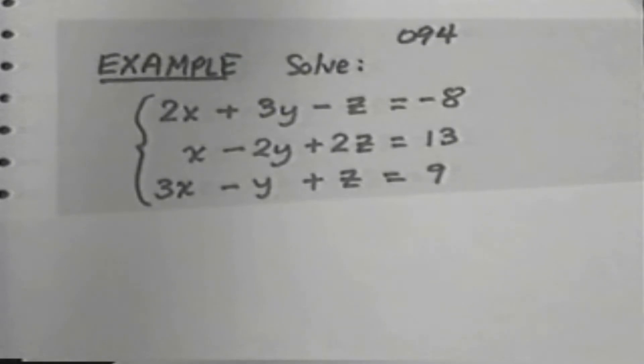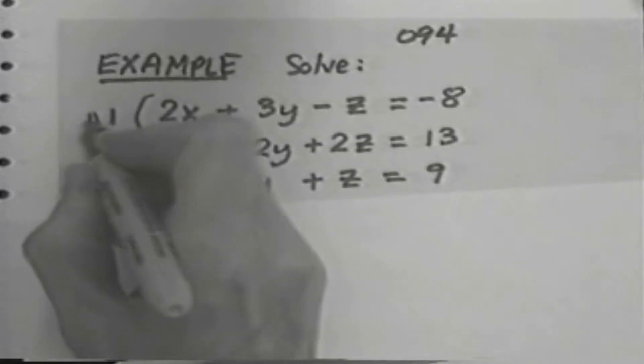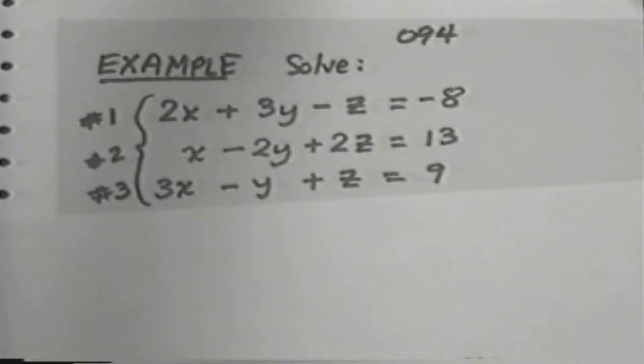We begin by using the addition method to eliminate one variable from any two of the equations. So that we can keep up with which is which, I'm going to number these equations. So over here to the left, outside the brace, here's equation number 1, here's equation number 2, and here's equation number 3. So our equations are numbered and we can talk about them now knowing which is which.